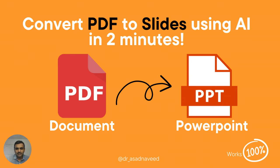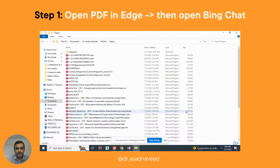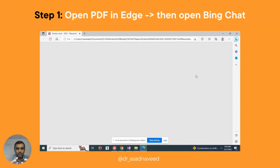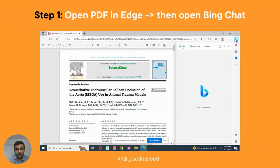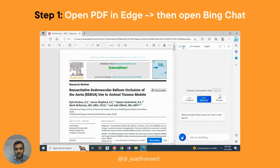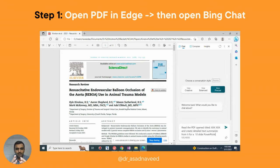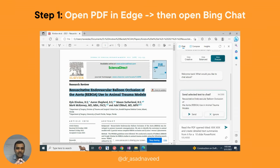Let's get started. The first step involves opening the PDF document, and you should open it in Microsoft Edge — not in any other browser or Adobe. The next step is to prompt Microsoft Edge, specifically Bing, to read this PDF and give you text summaries to create a PowerPoint slide.